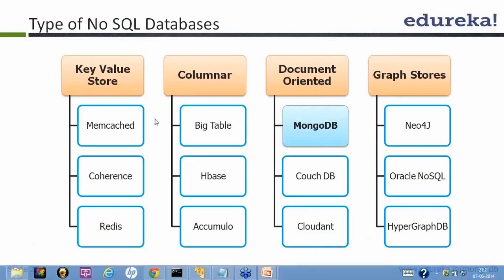A student named Rao asked whether HDFS Pig is columnar. Pig is not a columnar database — it's not a database at all. It is a scripting language used in the Hadoop ecosystem to process data. HBase is the database that falls under the columnar database category. Pig is a scripting tool to process data, not a database.